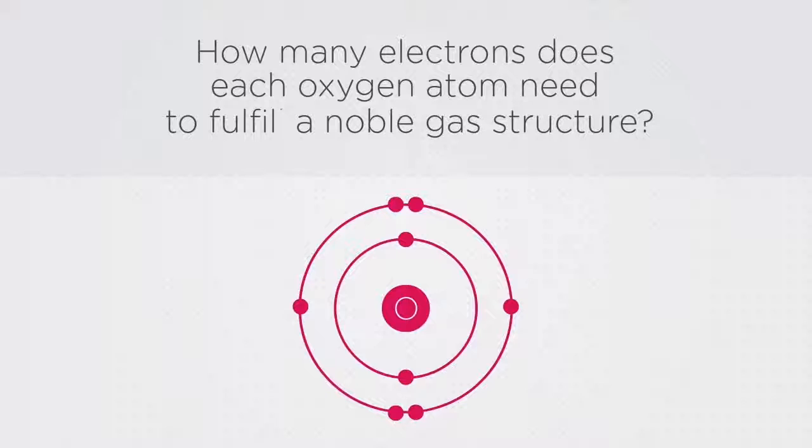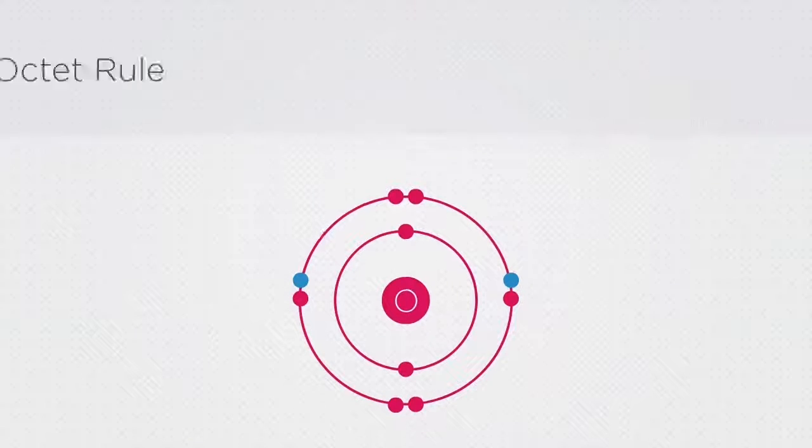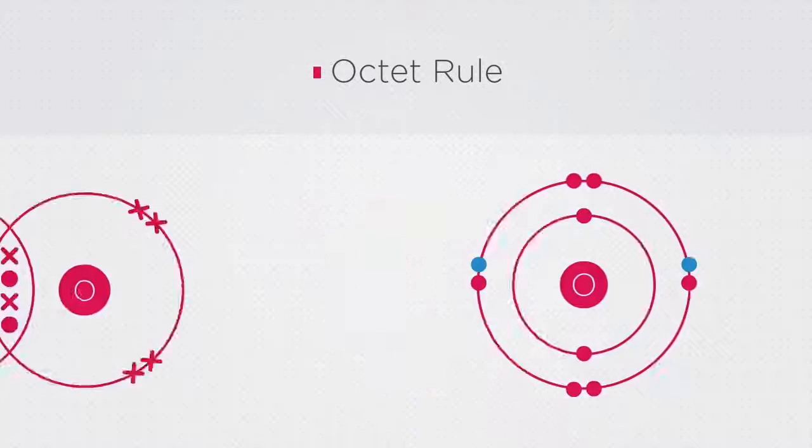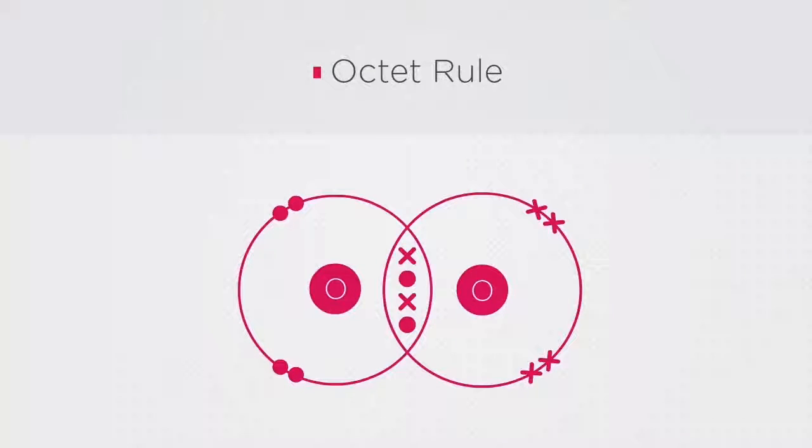The answer is that each oxygen atom needs two more electrons before fulfilling a noble gas structure. This is also called the octet rule. In this example, the octet rule is fulfilled because each oxygen atom shares two electrons in the outer shell, forming an O2 molecule.